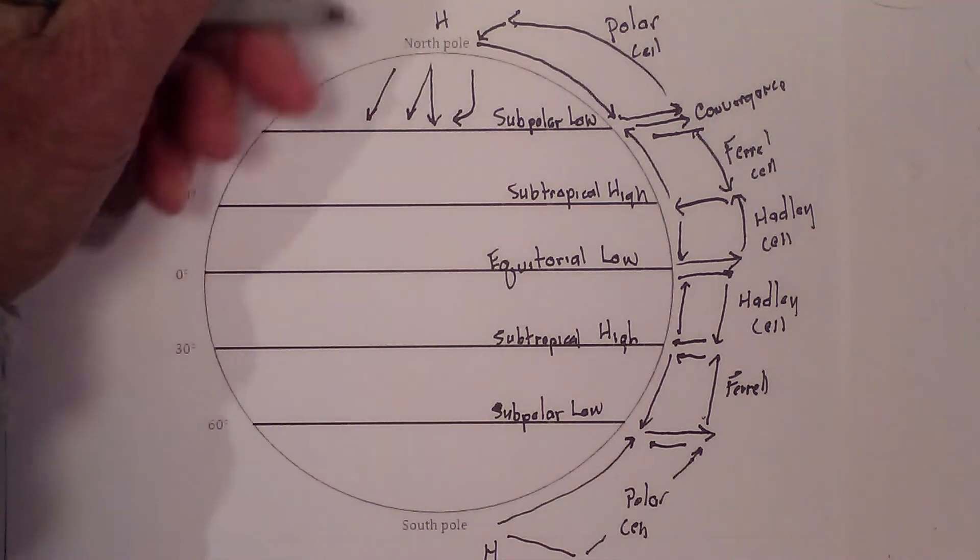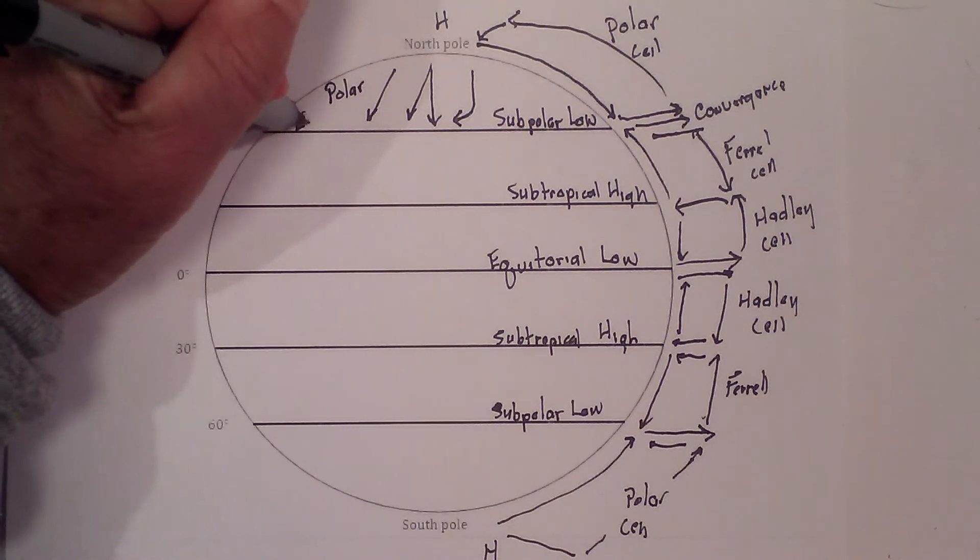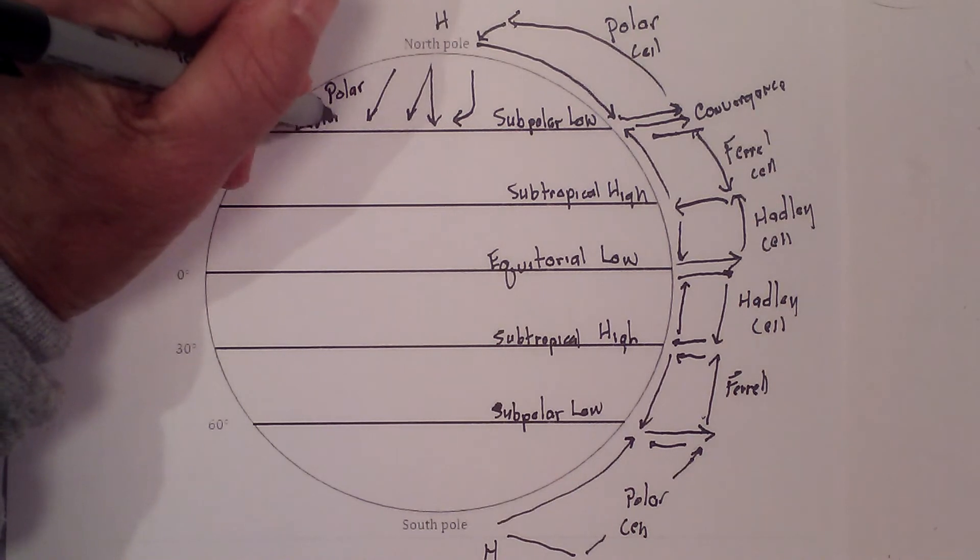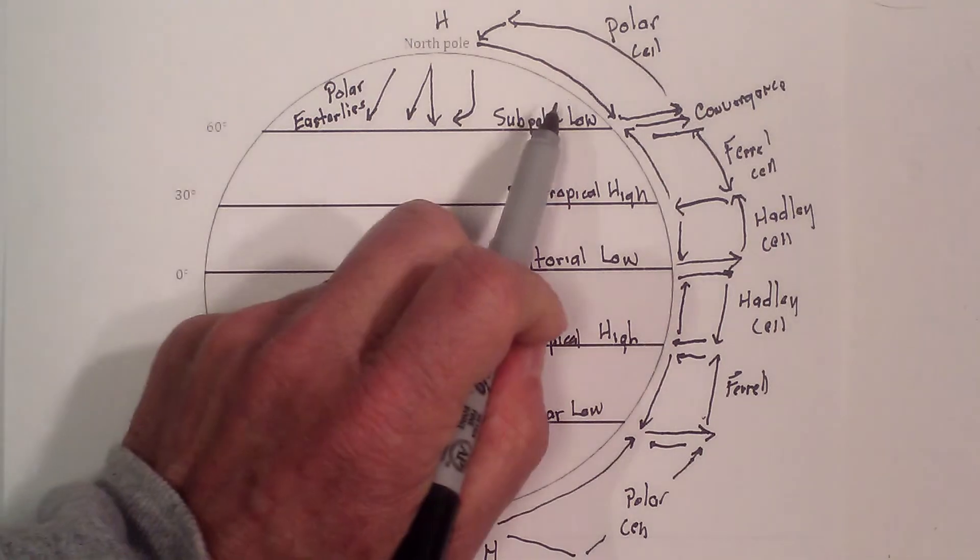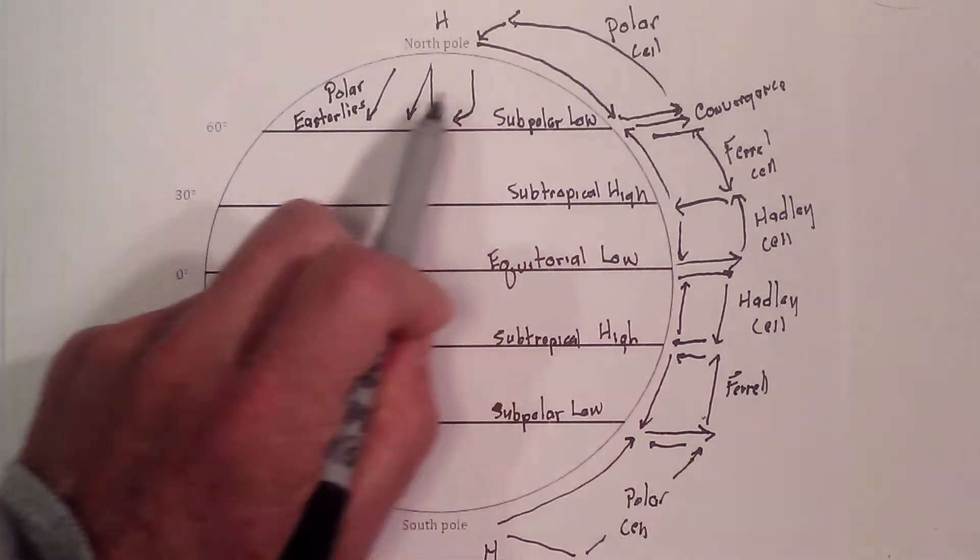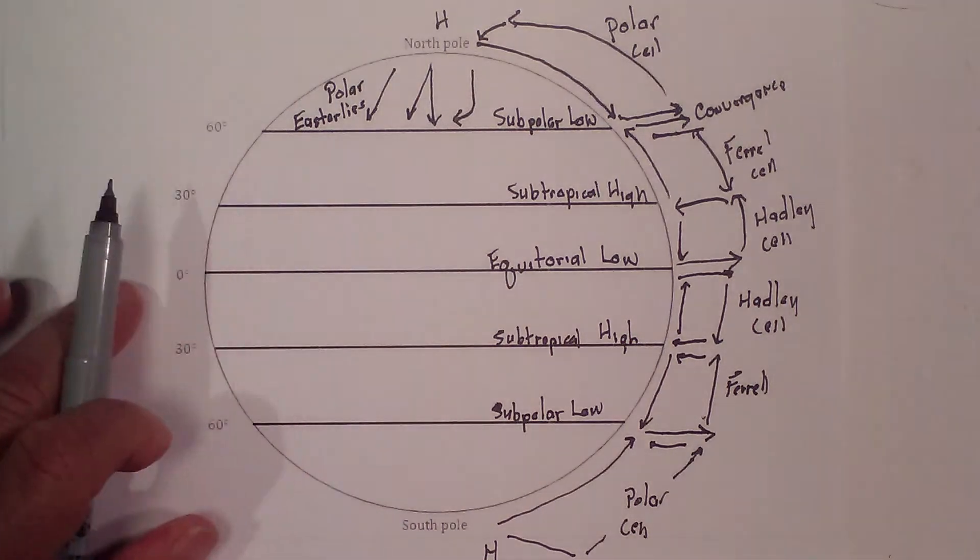And these are called the, I'm running out of space, polar easterlies. And remember winds are named from where they originate from. So they're moving from the east to the west. From the east to the west, the polar easterlies.